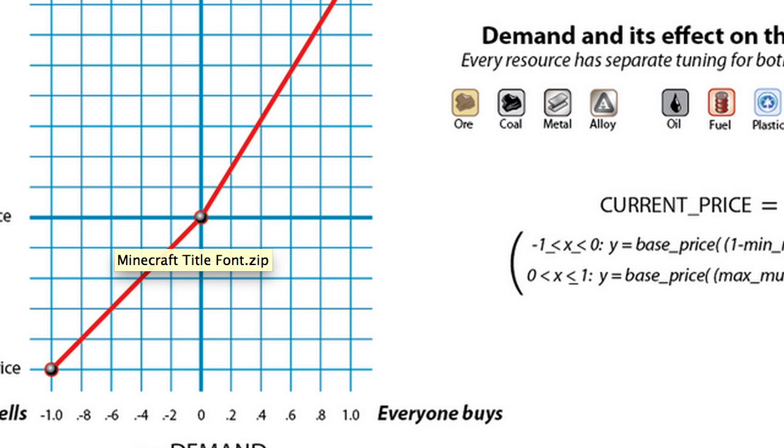So what are you looking at? Top right, let's start over there. We got demand and its effect on the base price. Those are the ten things that you can change price on, they're all the tradable goods. Under that, you have how the price is calculated. It's a little more complicated looking than it actually is. And then the graph to the left is where the magic happens.